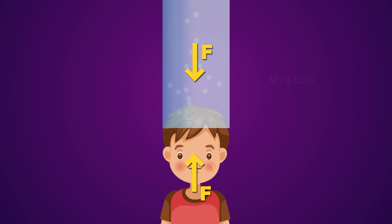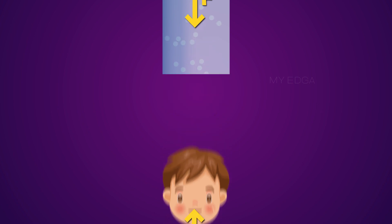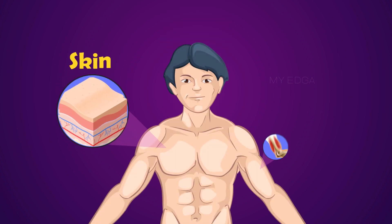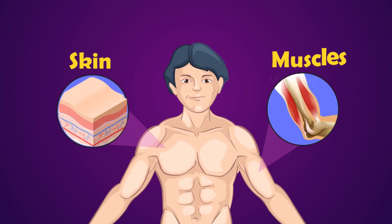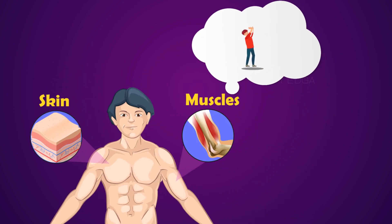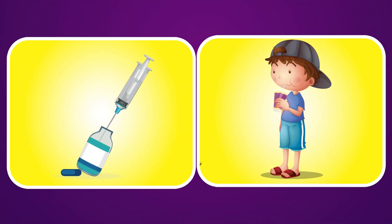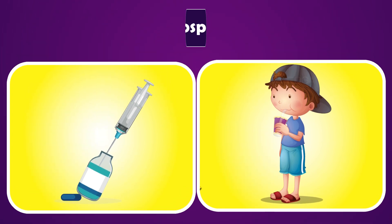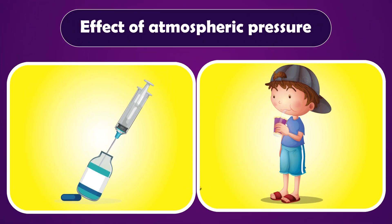Even when the internal and external pressures don't exactly cancel each other out, our skin, muscles, and other tissues are usually strong enough and flexible enough to not be damaged by the air pressure. Now let us see some life situations where we can see the effect of atmospheric pressure.